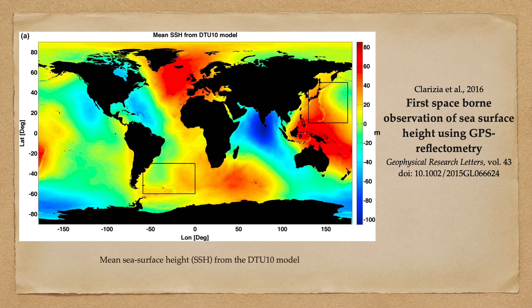We can use the altimetry data to create a global map of mean sea surface height, which is shown here. Again we see that mean sea surface height cleaves reasonably closely to the reference ellipsoid, but we again see significant deviations of the order of 100 meters — again confirming the result: sea level is not flat.